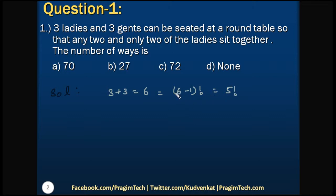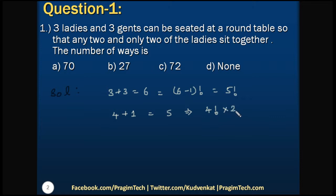Now let us consider the given condition: 2 ladies should sit together. We consider those 2 ladies as 1 group. The remaining people are 3 gents and 1 lady, plus this group — making 5 people total. Five people can be arranged around a circular table in 4! ways. Those 2 ladies can also interchange their places, giving 4! × 2 arrangements.